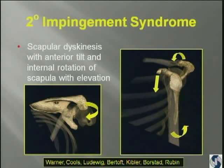More recently, a lot of people have been talking about scapular dyskinesis with anterior tilt and internal rotation of the scapula with elevation, and in fact that is where I see most of my impingement syndromes coming from.